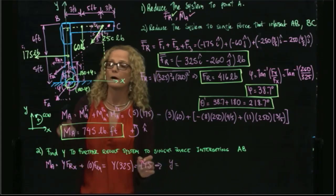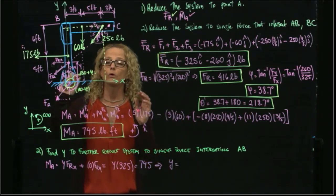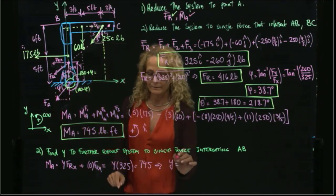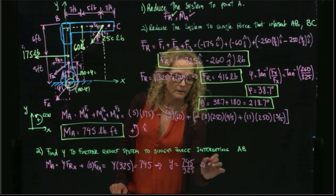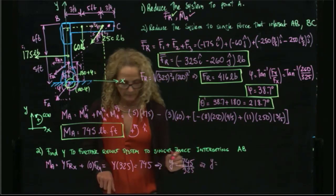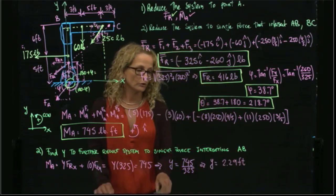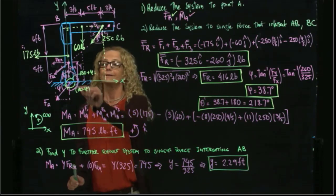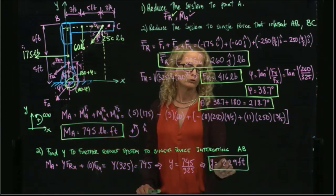Therefore, in order to have an equivalent system where the system reduces to a single force producing the same moment at A, I solve for Y and get Y equals 2.29 feet. So the force must be placed at 2.29 feet along AB.